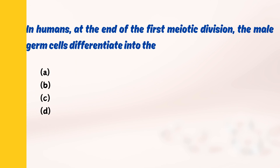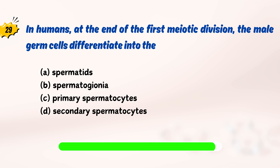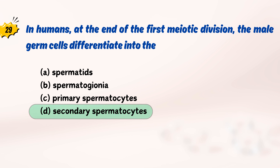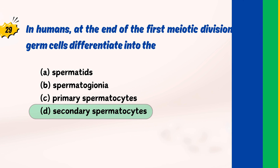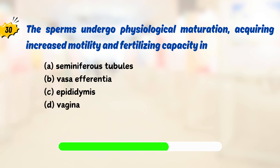In humans, at the end of the first meiotic division, the male germ cells differentiate into? The sperm undergo physiological maturation, acquiring increased motility and fertilizing capacity in?